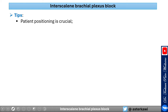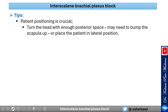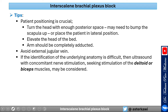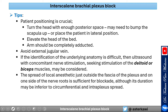Tips for a successful interscalene block: position is everything. Turn the head with enough posterior space — you may need to pump the scapula up or place the patient in lateral position. Elevate the head of the bed, especially in obese patients, to avoid an engorged external jugular vein. Arms should be completely adducted to the side. If anatomy identification is difficult, use ultrasound with concomitant nerve stimulation, looking for deltoid or biceps muscle contraction. Local anesthetic spread outside the fascia on one side of the nerve root is sufficient, though circumferential spread gives longer duration.